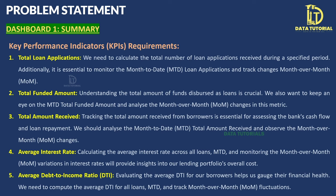The second KPI is Total Funded Amount — how much loan amount has been disbursed to customers — also needed for MTD and MoM. The third KPI is Total Amount Received — the repayments made by borrowers back to the bank, typically via EMI installments each month — again needed overall, for MTD, and for MoM change.